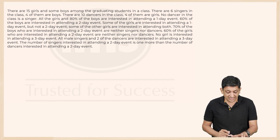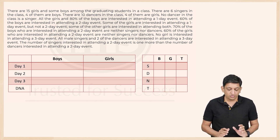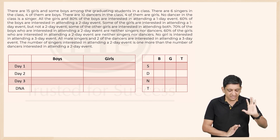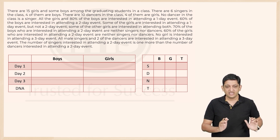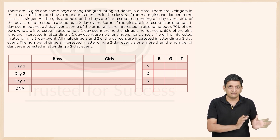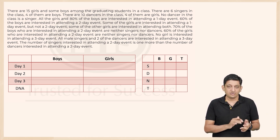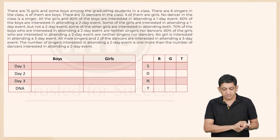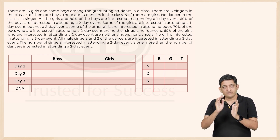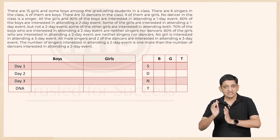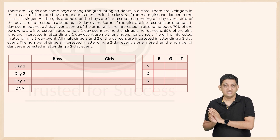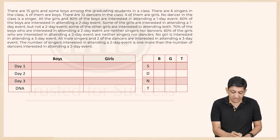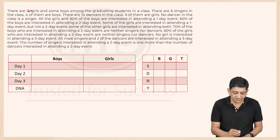The two tables will be structured as follows: one axis will have boys and girls, and the columns will be day one, day two, day three, and DNA — meaning 'did not attend' or 'do not want to attend'. The rows will represent singers, dancers, neither, and total.